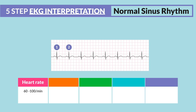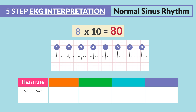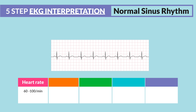We have one, two, three, four, five, six, seven, eight — then multiply by 10, so that's a heart rate of 80. The rate is between 60 and 100. Step number two is the rhythm — it should be regular and evenly spaced apart.